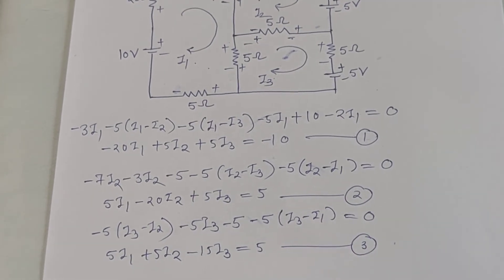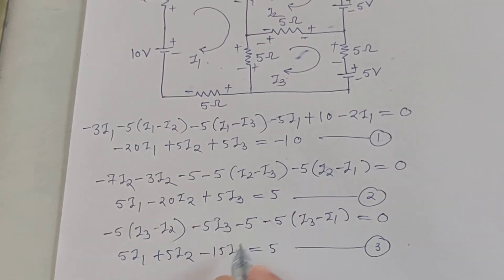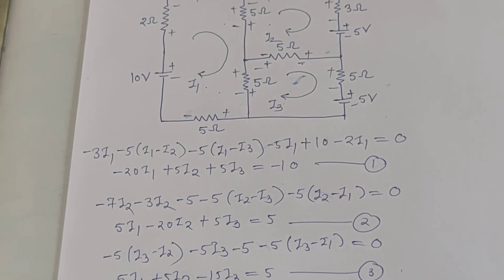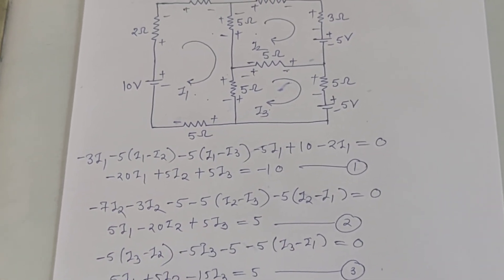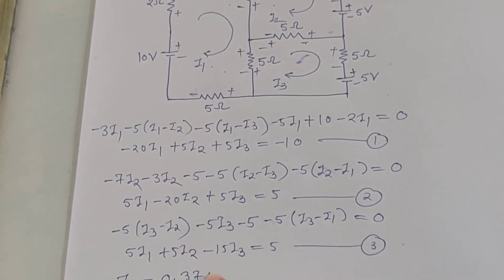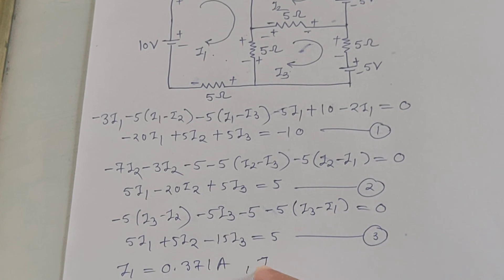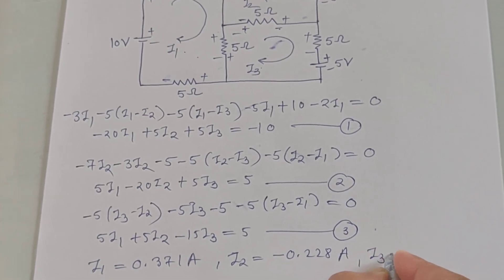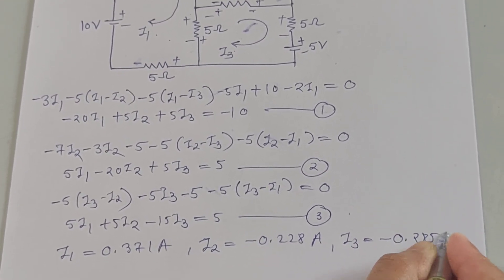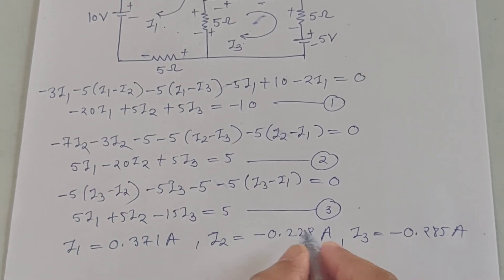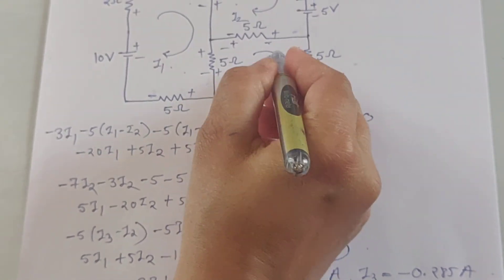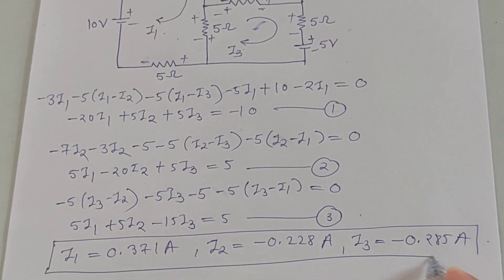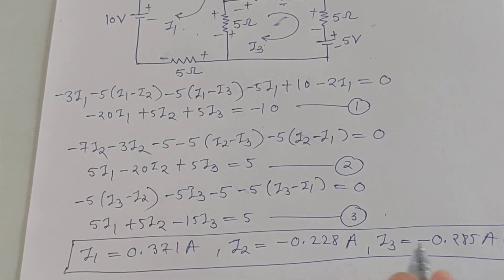We now have three simultaneous equations. Solving them gives: I1 equals 0.371 amperes, I2 equals minus 0.228 amperes, and I3 equals minus 0.285 amperes. The negative values mean the assumed current direction is wrong; the actual direction is opposite. These are the three loop currents I1, I2, and I3 found using loop analysis. Thank you.